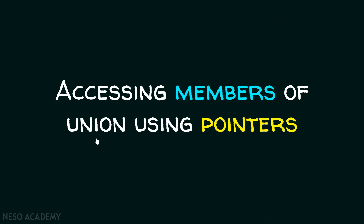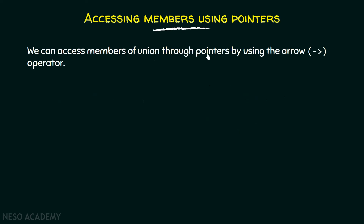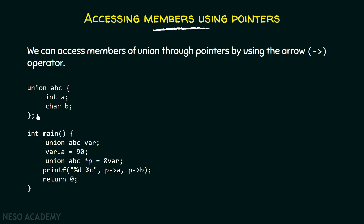Now, how to access the members of a union using pointers? We can access members of a union through pointers by using the arrow operator, just like with structures. For example, we have union ABC with two members A and B. In the main function, we declare a variable of type union ABC, assign member A the value 90, and then declare a pointer P pointing to the object var of type union ABC. Using the arrow operator, we can access members A and B.